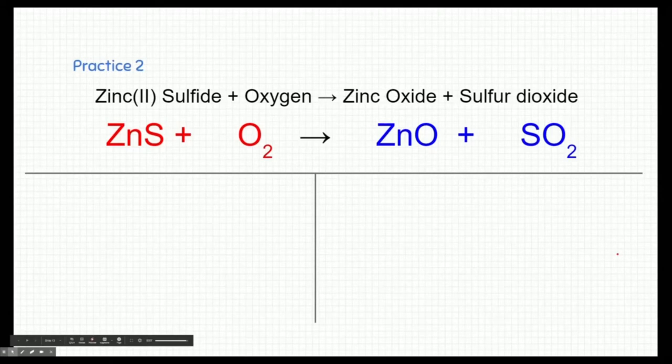The first one is zinc 2 sulfide. That's zinc with a positive 2 charge and sulfur is a minus 2 charge. So there's one of each of those. Oxygen in this case is one of the special diatomic elements. So we have to write it as O2. Zinc oxide: zinc is still a plus 2 charge and oxygen is a minus 2 charge. So there's one zinc and one oxygen going together. Lastly, sulfur dioxide is a covalent compound. So that's one sulfur and two oxygens.